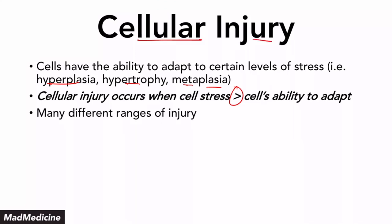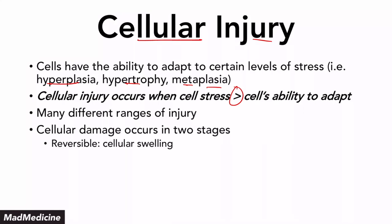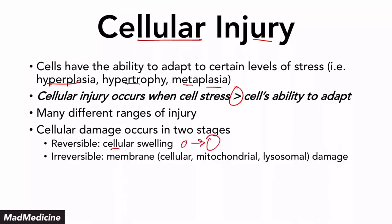All of this is going to depend on the range of the injury and the type of stress placed upon it. Depending on what type of stress is placed upon a cell, the injury is going to vary. There are two main mechanisms: reversible cellular injury — that's the first stage where you're going to see cellular swelling — and then the second stage is irreversible damage where you're going to have membrane damage occurring, not just to the cell, but also to the mitochondria and the lysosomal membranes as well.